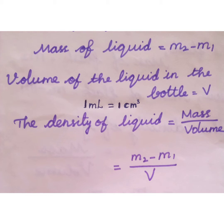Note that 1 milliliter is equal to 1 centimeter cube. The density of the liquid is equal to mass divided by volume, which means M2 minus M1 divided by V.